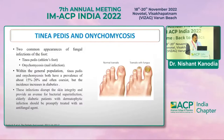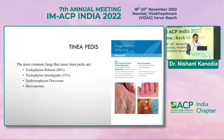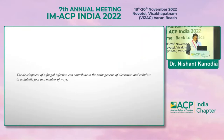Tinea pedis and onychomycosis are the two major fungal infections of the foot. Within the general population, tinea co-exists, and 15 to 20 percent of incidences occur in people with diabetes. These infections disrupt the skin's integrity and provide a venue for bacterial superinfection in elderly diabetic patients with dermatophytic infections, which can be treated with antifungal agents. Tinea pedis can be caused by Trichophyton rubrum, Trichophyton interdigitale, Epidermophyton floccosum, and Microsporum canis.